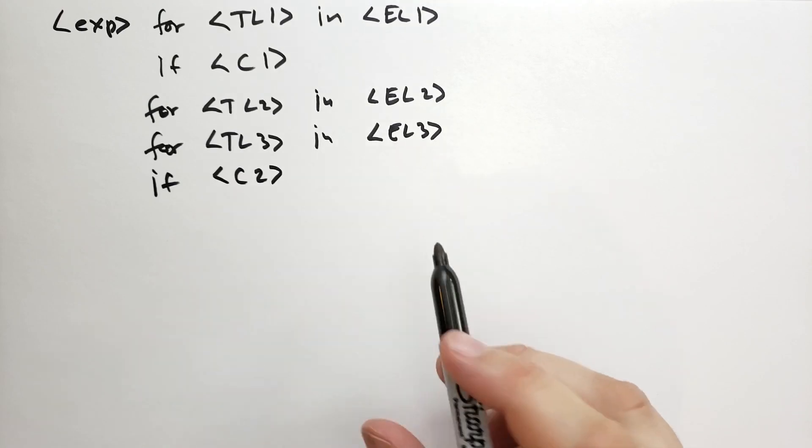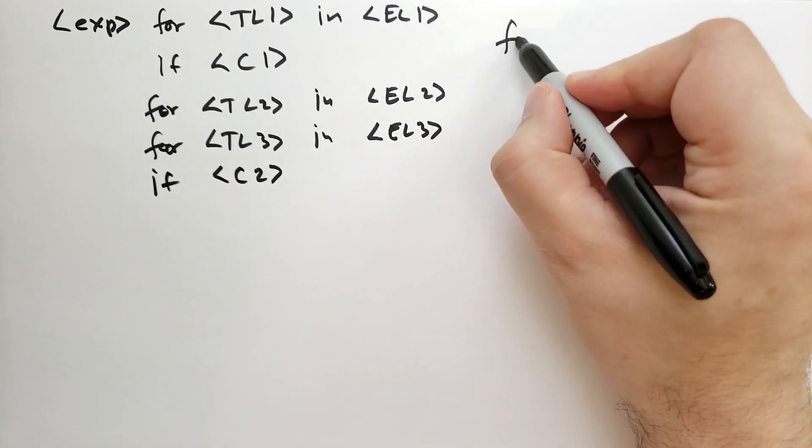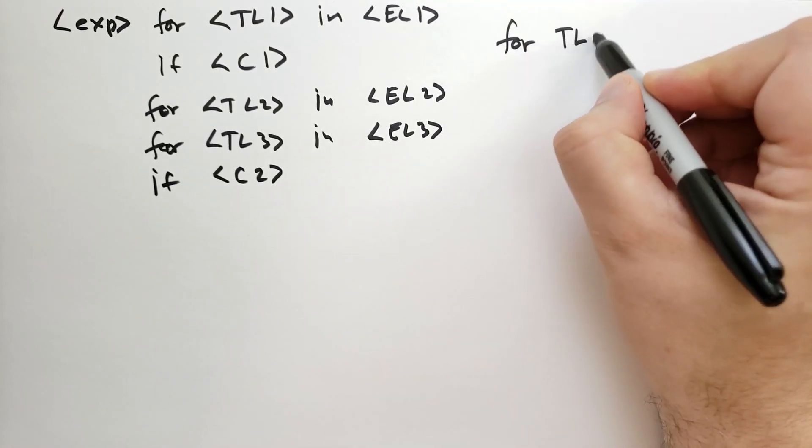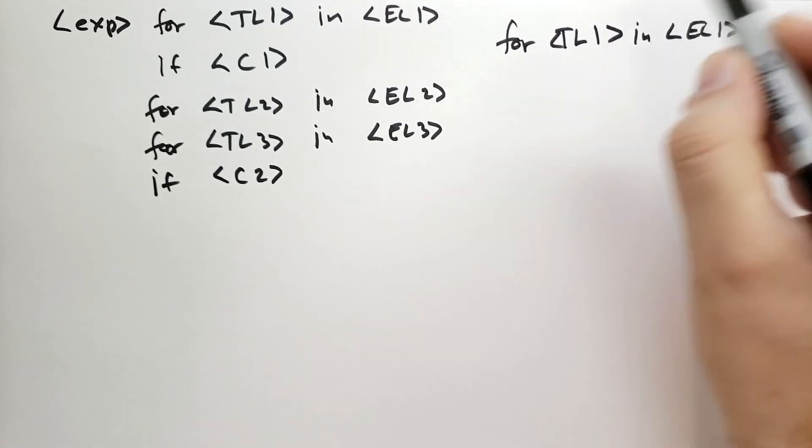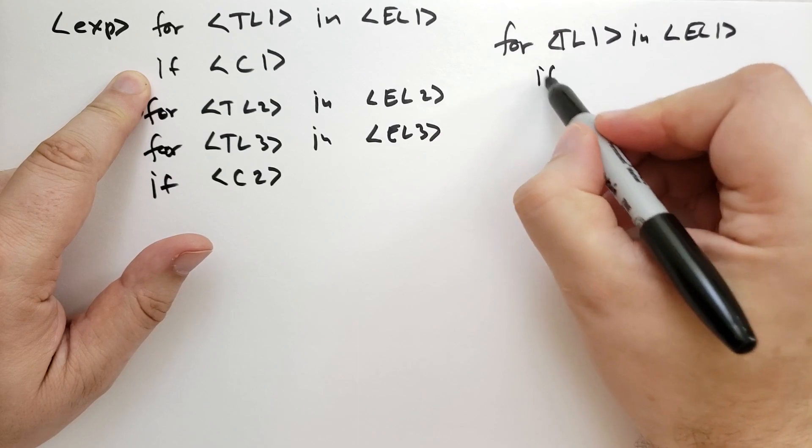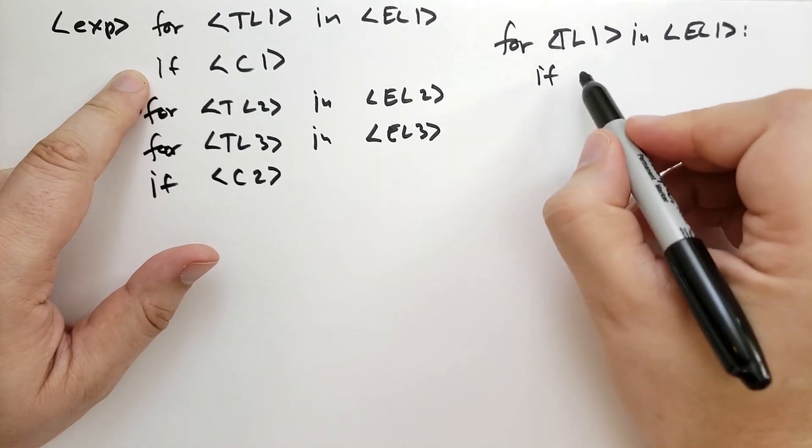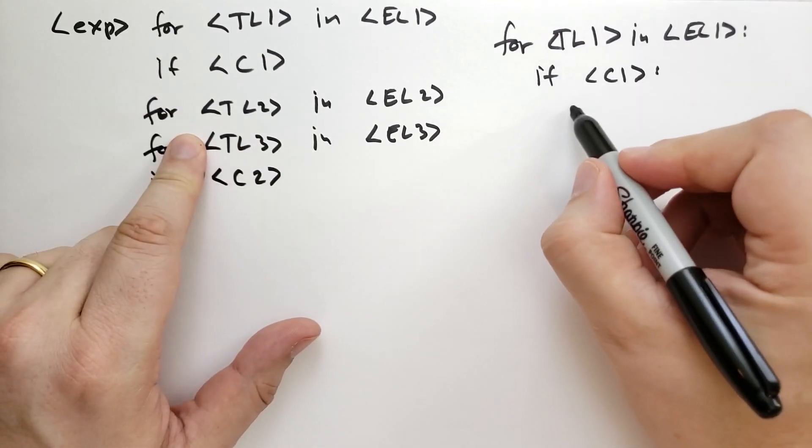Okay, so this comprehension would basically break down into the following code. For target list 1 in expression list 1. And then we have an if, if condition 1. And then we have for,